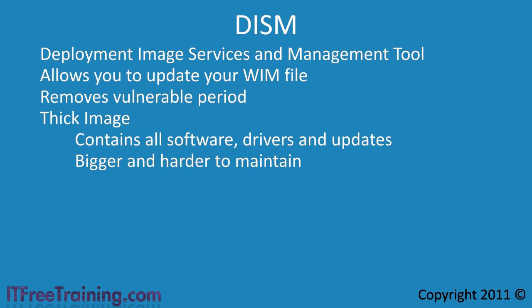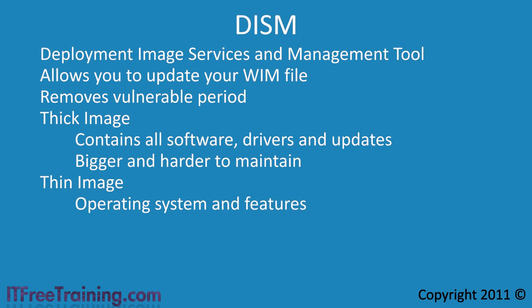Since the images are larger, they take longer to deploy and take up more disk space. The next type of image is a thin image. These images contain the basic operating system and features. No software is installed on these images. When the image is deployed, software is installed from the network.